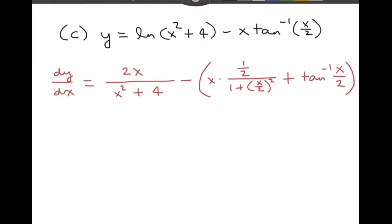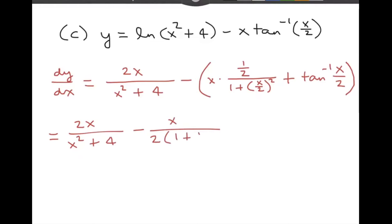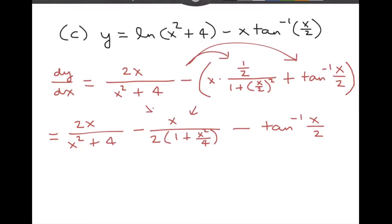So now let's try to simplify. We have 2x over x squared plus 4, minus — distributing this minus sign — we can put the x up here and the 2 down here, and then we have 1 plus x squared over 4. And then this is minus, because remember we're distributing the minus sign, the inverse tangent of x over 2.